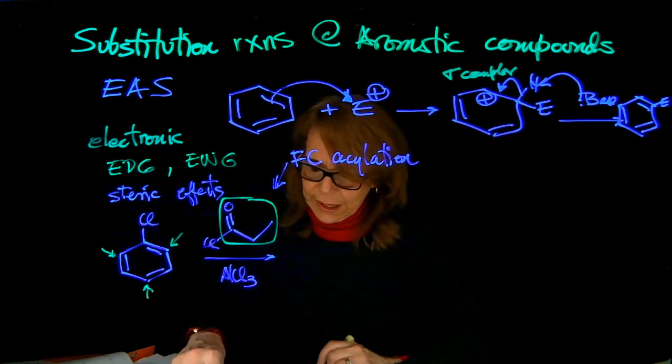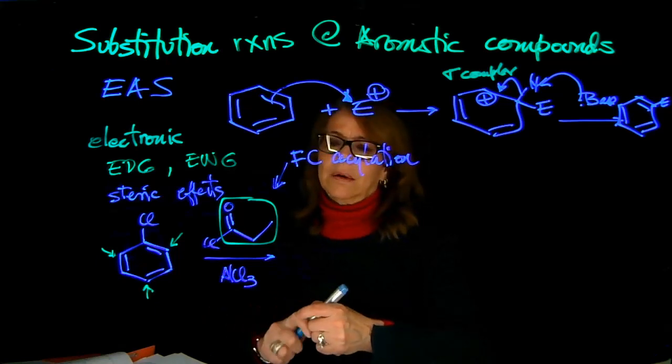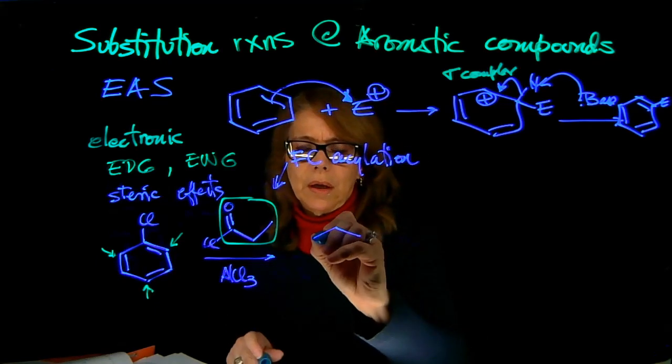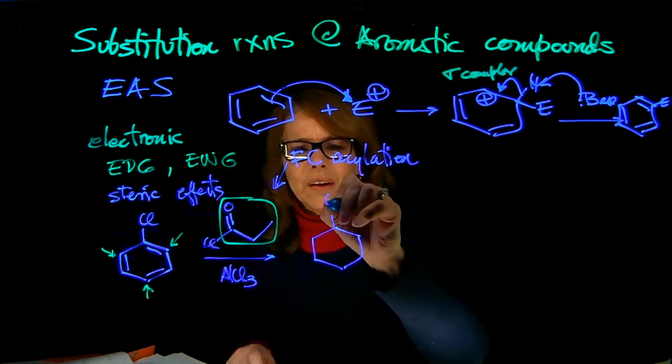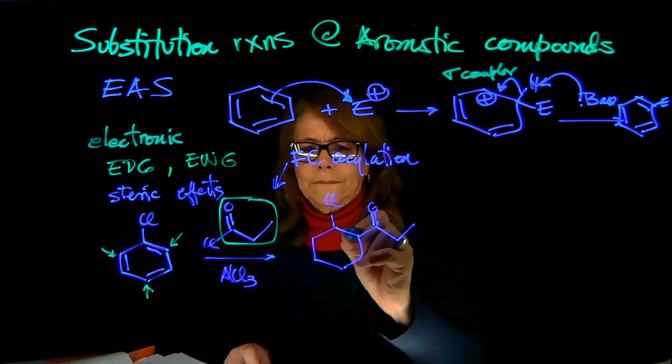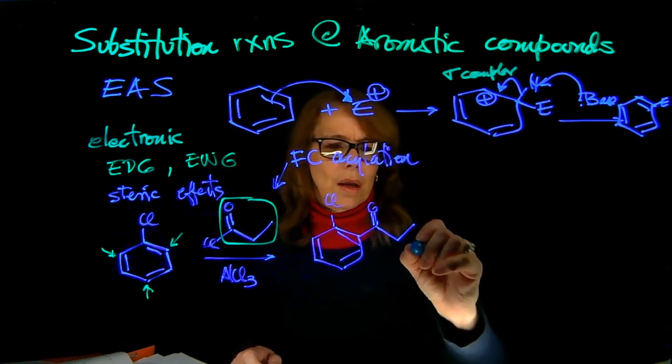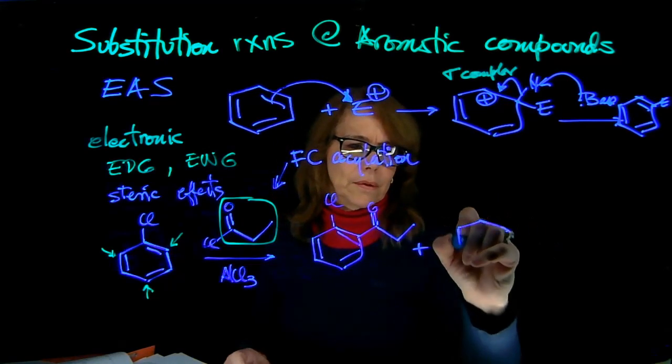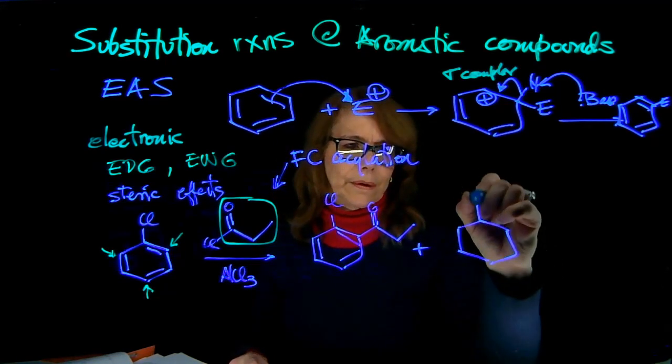So let's look at the structures here. First, I'm going to be drawing both, and we're going to be analyzing what is the major. So that's one, the ortho, and we're going to have the other product at the para position.